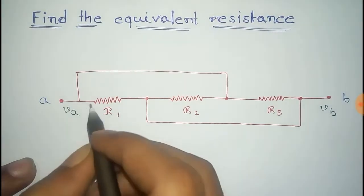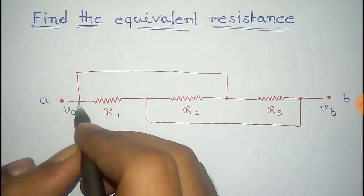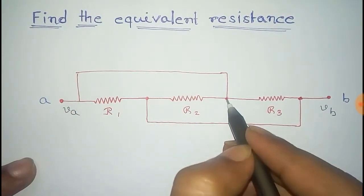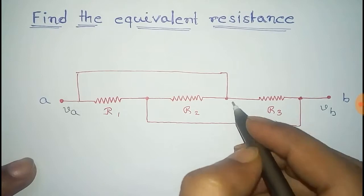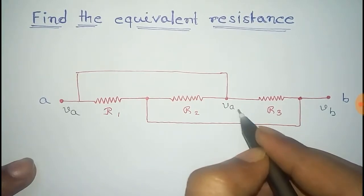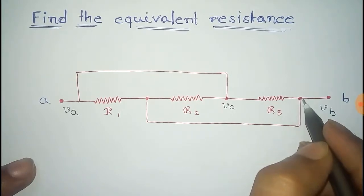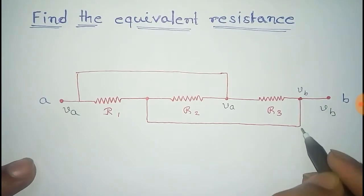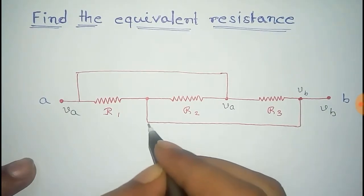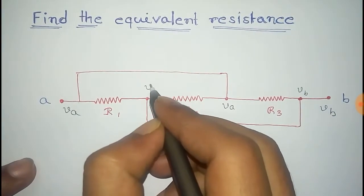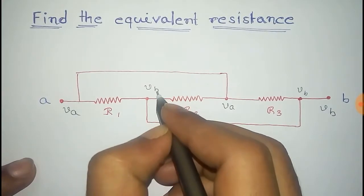You can see that the potential at this point is VA, and since this is shorted, the potential at this node must also be VA. Similarly, the potential at this point is VB, and since this is shorted, the potential here is also VB.